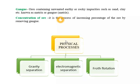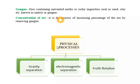Before studying the physical process, two common terms — gangue and concentration of ore — must be known. Gangue means the ore containing unwanted earthy or rocky impurities such as sand and clay, known as matrix or gangue. In short, gangue is the unwanted impurities present in the ore. Concentration of ore is the process of increasing the percentage of the ore by removing impurities or gangue, thereby increasing the percentage of metal.